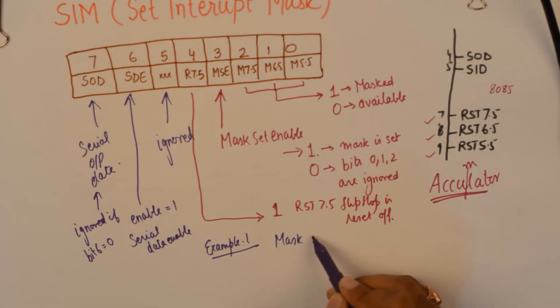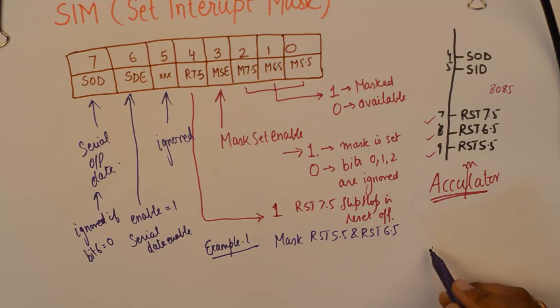So what we need to do is, we need to mask RST 5.5 and RST 6.5 so that they do not interrupt in our program. For that, we will find out the code first.